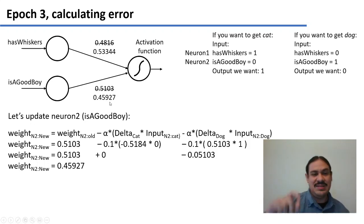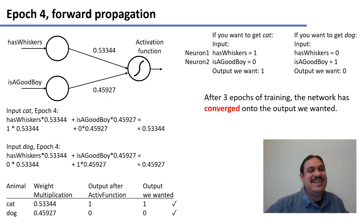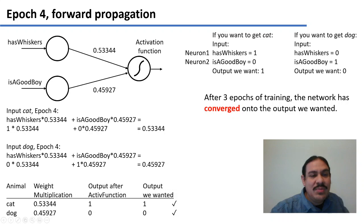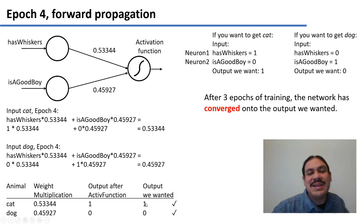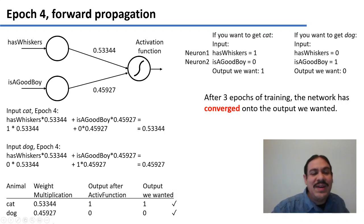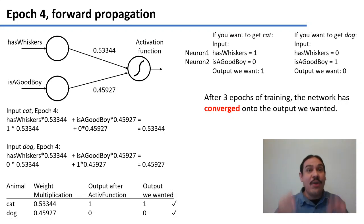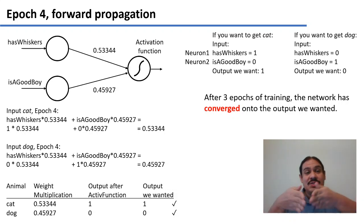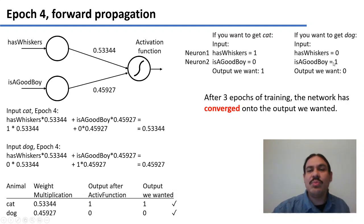Hopefully this will make things work — and they do. In epoch 4 forward propagation, for cat: 1 multiplied by 0.53 plus 0 multiplied by 0.45927 equals 0.53. When you round this, it goes up to 1, giving the output we wanted. For dog: 0 multiplied by the first weight plus 1 multiplied by the second weight equals 0.45, which rounds down to 0 — exactly what we wanted. So after three epochs of training, the network has converged onto the correct output, transforming 1,0 into 1 and 0,1 into 0.